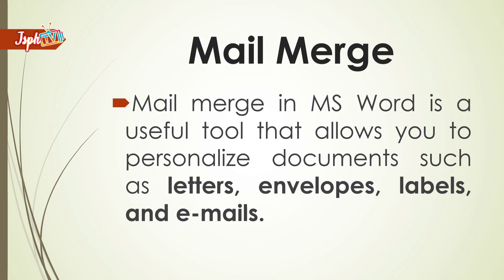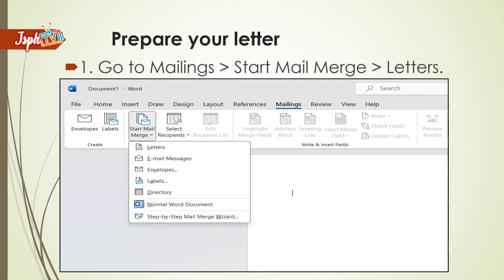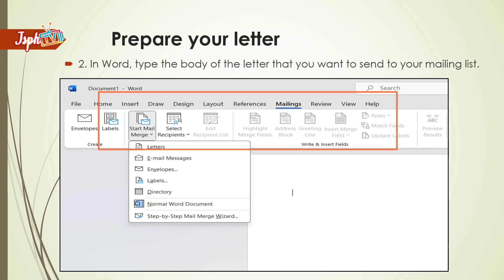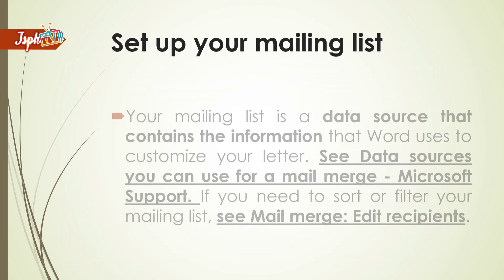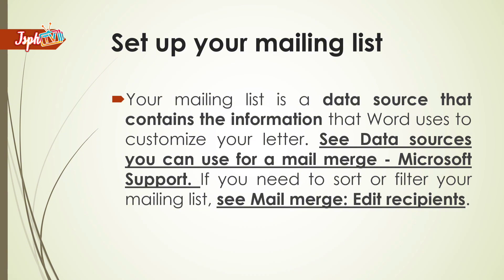Mail Merge in MS Word is a useful tool that allows you to personalize documents such as letters, envelopes, labels, and emails. To prepare your letter, first go to Mailings, Start Mail Merge, then Letters. In Word, type the body of the letter that you want to send to your mailing list. Set up your mailing list — your mailing list is a data source that contains the information that Word uses to customize your letter. If you need to sort or filter your mailing list, see Mail Merge Edit Recipients.